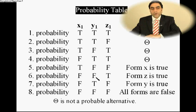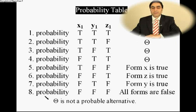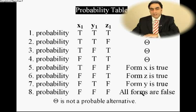At the fifth probability, X1F Y1F Z1T — the result form Z is true, depending on Z1. At the seventh probability, X1F Y1T Z1F — the result form Y is true, depending on Y1. At the last (eighth) probability, X1F Y1F Z1F — it means all forms are false.